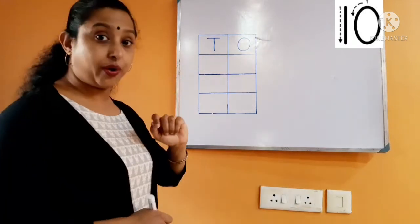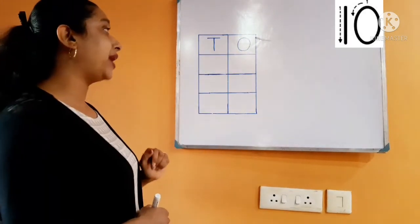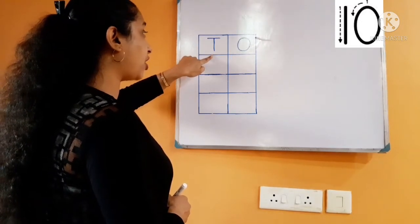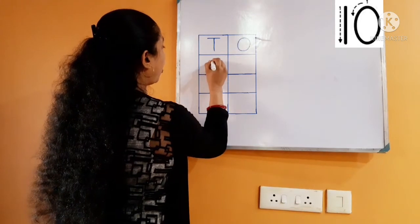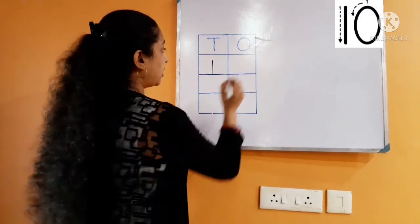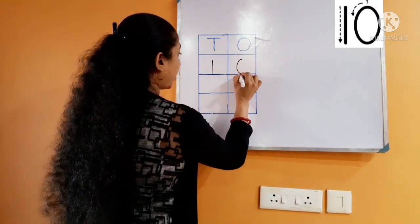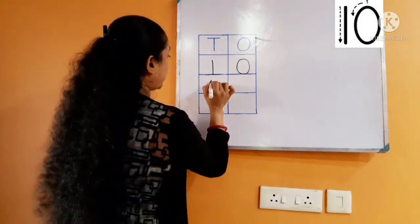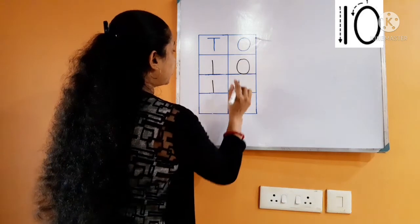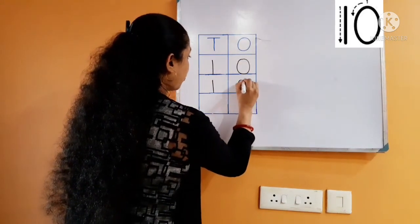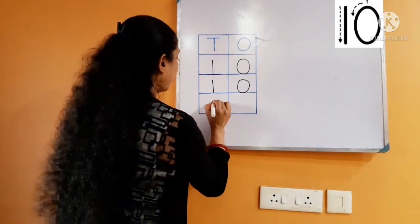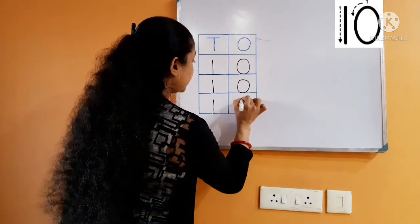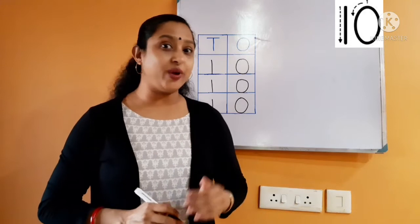One and zero are best friends and they make number ten. One is written below the tens house and zero is written below the ones house. We have to write the number from the middle of the box; we should not touch the top line of the box. Start from the middle of the box to the bottom line of the box, then zero — touching the bottom line. So one, zero, ten. One is written below the tens house and zero is written below the ones house.